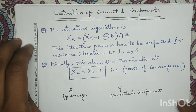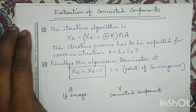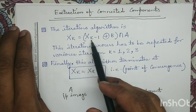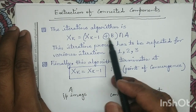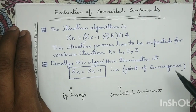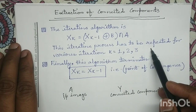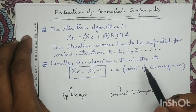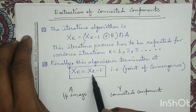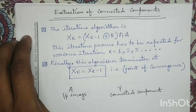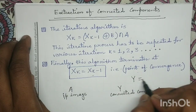In order to perform the extraction of connected component, we will perform an iterative algorithm. The algorithm is: x_k equals x_(k-1) dilation with the structuring element B, and the result of the dilation operation we will perform the intersection with the original image A. We repeat this for k = 1, 2, 3. This iterative algorithm will terminate when we reach the point of convergence, that is when two consecutive iterations give the same output — x_k equals x_(k-1) — our algorithm terminates, and y equals x_k.